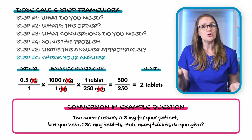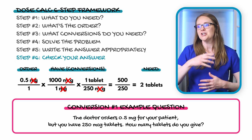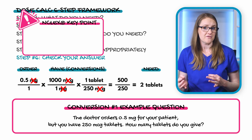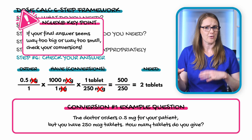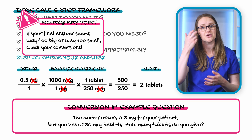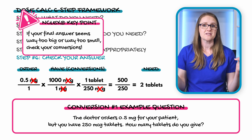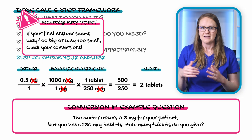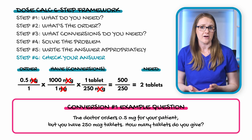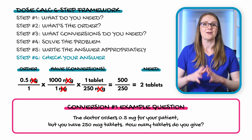Step six: always double-check. Does two tablets make sense? Rework the problem to verify your math. A big NCLEX tip: if your final answer seems way too big or too small, check your conversions — did you move the decimal to the right place, set up the equation so all units cancel out, and multiply and divide correctly? Those are the three big areas where students get stuck.